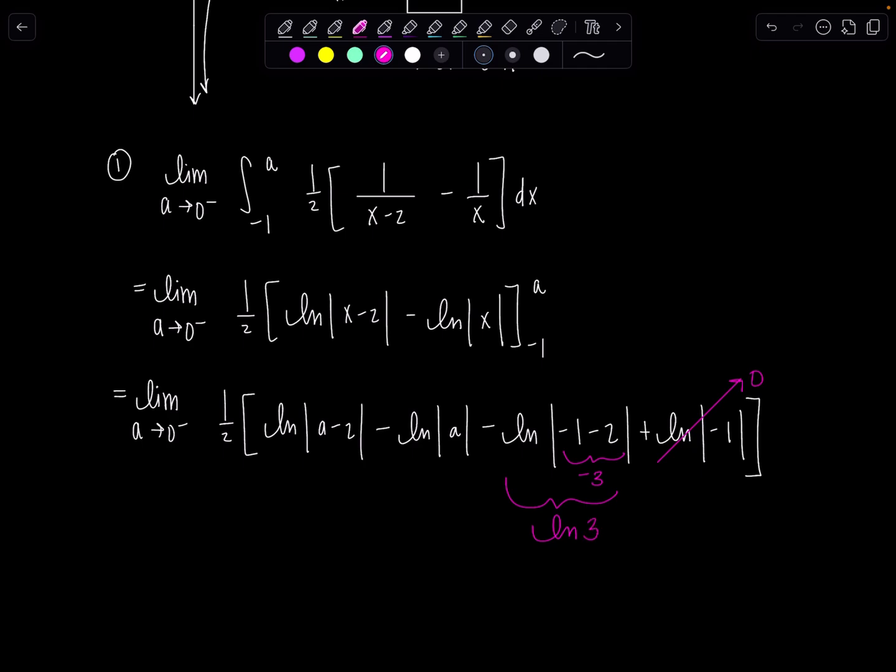And then this first term here, a is approaching zero from the left. That's fine. Zero minus two, that's negative two. But then you take absolute value. So this is approaching ln two. And then here's where it gets good.